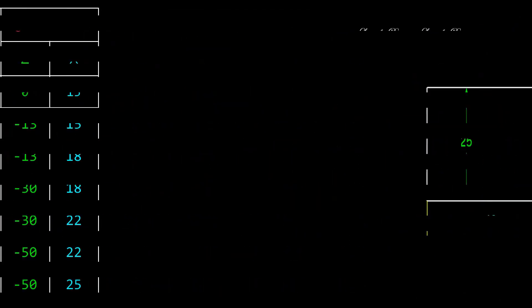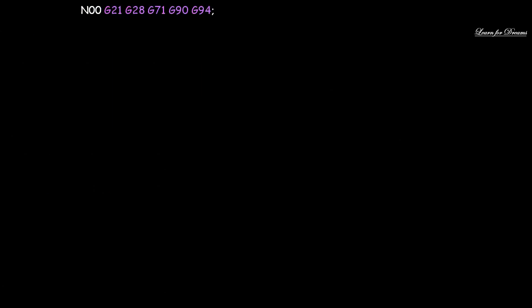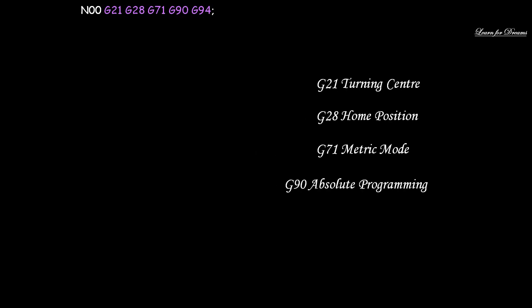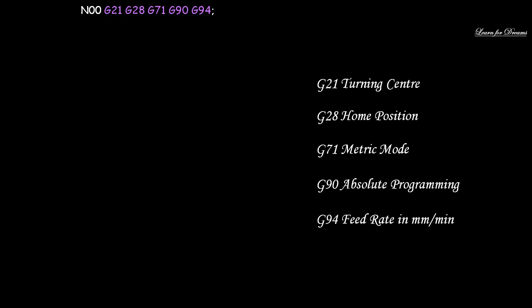Now let's start with the actual program. The depth of cut is 0.5 mm so it will cut 1 mm. The first line is N00: G21, G28, G71, G90, and G94. Here G21 is for the turning center, G28 is home position, G71 is metric mode, G90 is absolute programming, and G94 is feed rate in mm per minute.